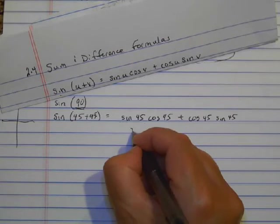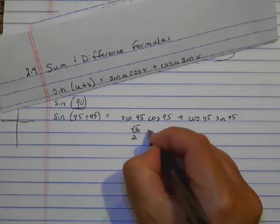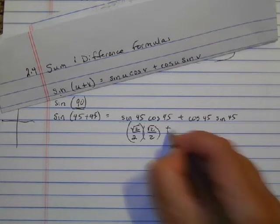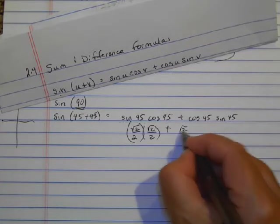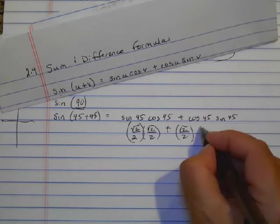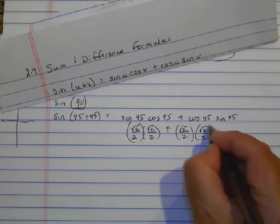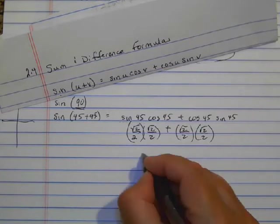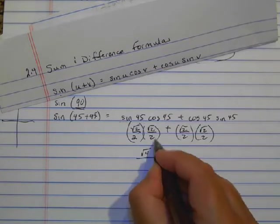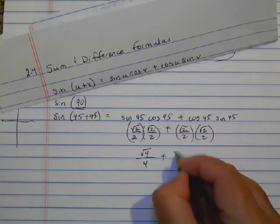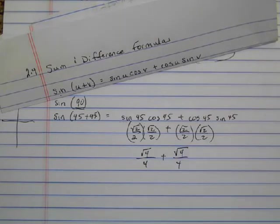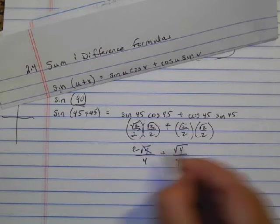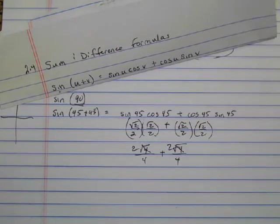Sine at 45 is square root of 2 over 2. Cosine at 45 is square root of 2 over 2. Add cosine of 45 is square root of 2 over 2. And sine of 45 is square root of 2 over 2. So this would be square root 4 over 4 plus square root 4 over 4. And we know that the square root of 4 is 2.